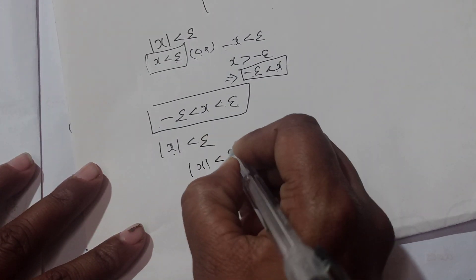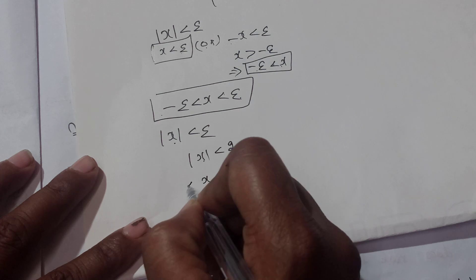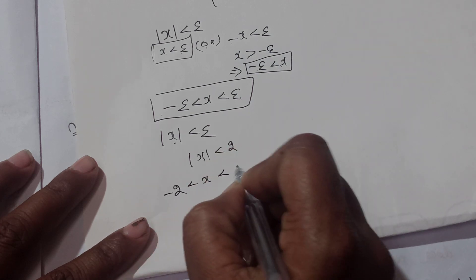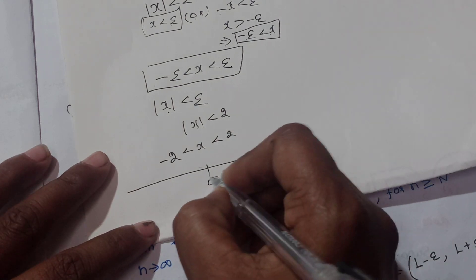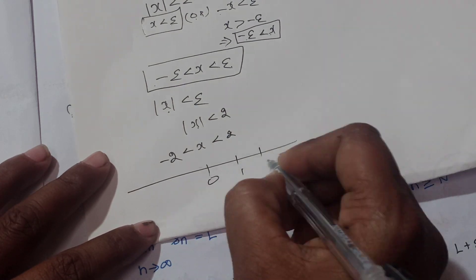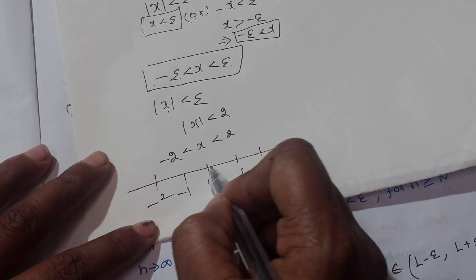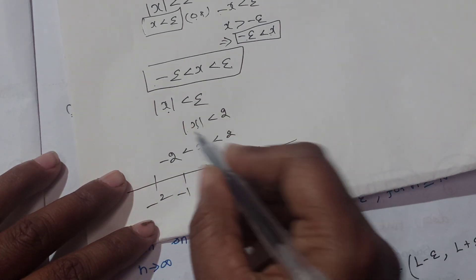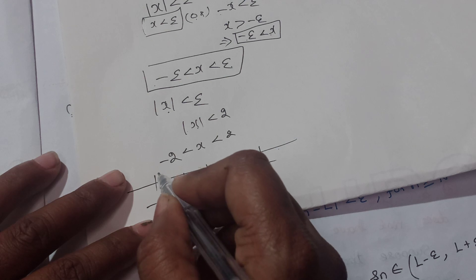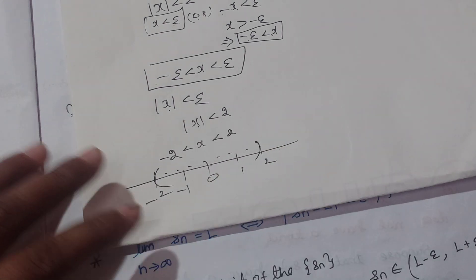For example, mod x less than 2 means x takes the value between minus 2 and plus 2. On the real line we have 0, 1, 2 and minus 1, minus 2. Between 0 and 1 there are an infinite number of elements. So mod x less than 2 means x is in the open interval (-2, 2).